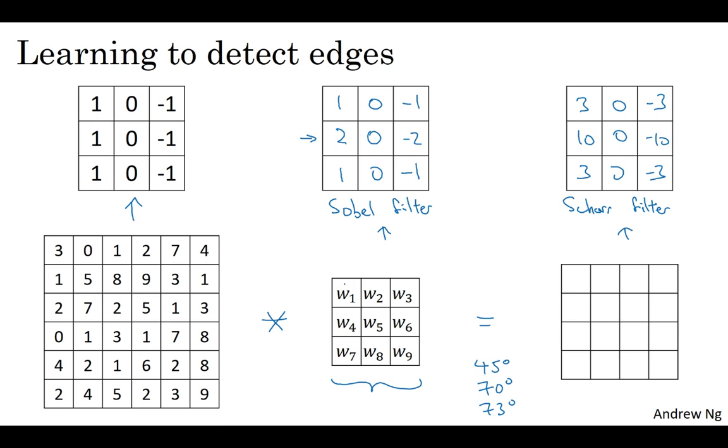By just letting all of these numbers be parameters and learning them automatically from data, we find that neural networks can actually learn low-level features, can learn features such as edges, even more robustly than computer vision researchers are generally able to code up these things by hand. But underlying all these computations is still this convolution operation.